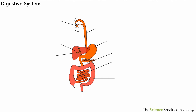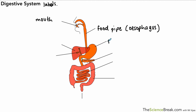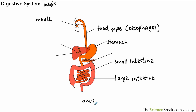Now we can take a look at the whole digestive system in more detail. Starting with labeling: the mouth leads to the food pipe — the esophagus — which leads to the stomach, then the small intestine, then the large intestine, and finally the anus. We also have a couple of extra parts: the pancreas, the liver, and the gallbladder.